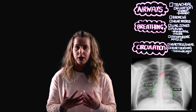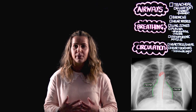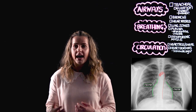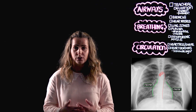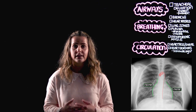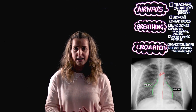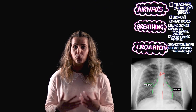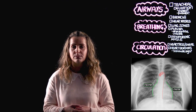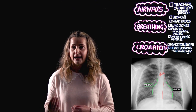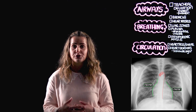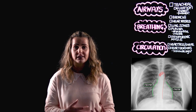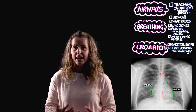The aorta passes posterior to the pulmonary vessels and bulges as a knuckle on the left of the superior mediastinum. If the width of the superior mediastinum is greater than eight centimeters, this is abnormal and may suggest a mass or aortic aneurysm.